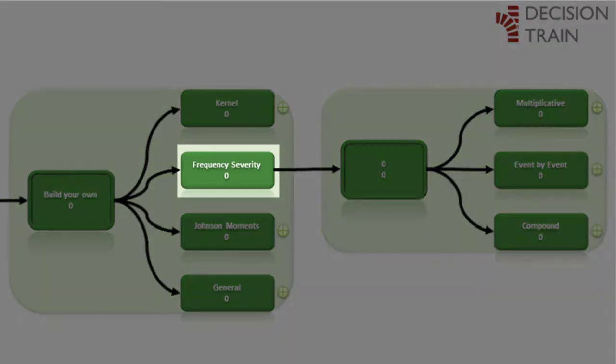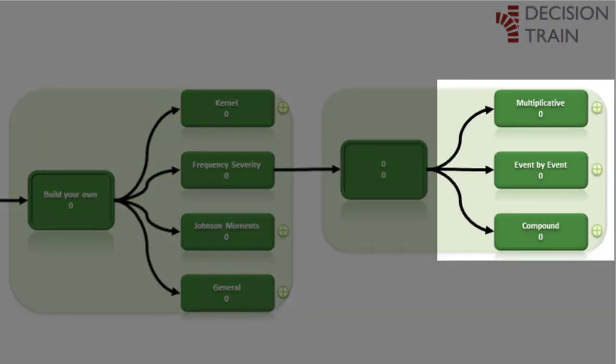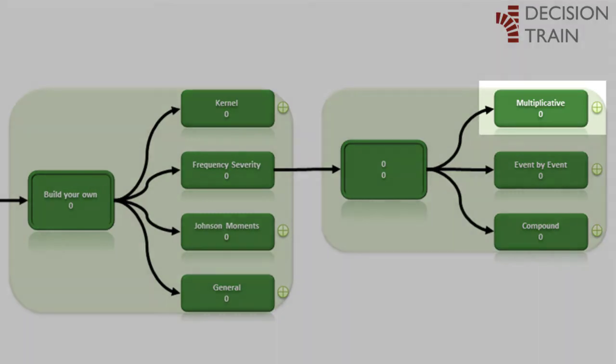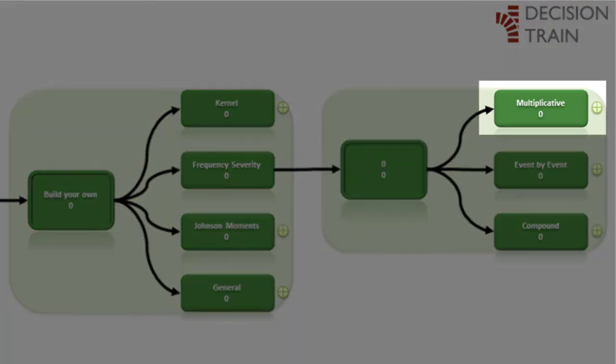There are at least three ways in which a frequency/severity model can be constructed with @RISK. The first approach is a simple rough approximation where the frequency of the loss is simply multiplied by its severity.